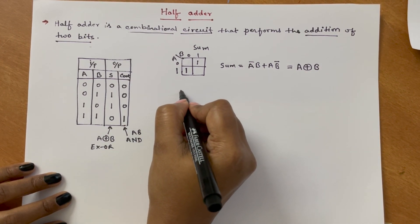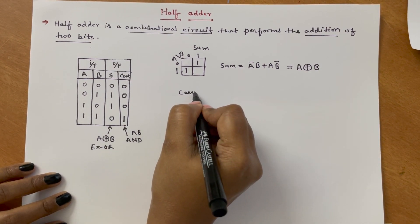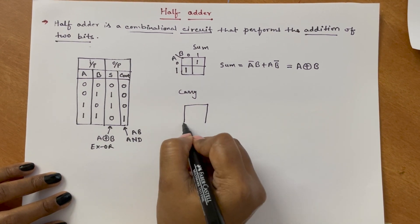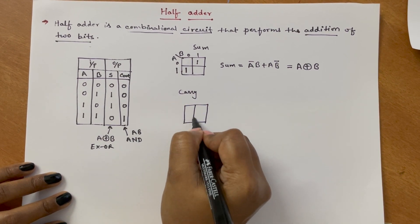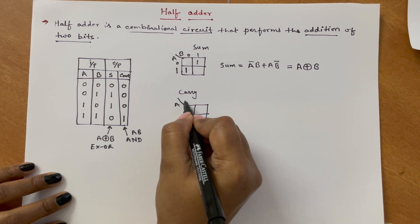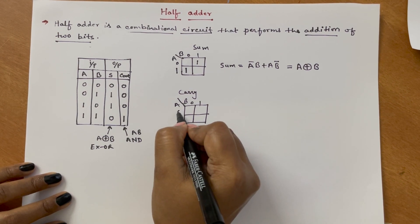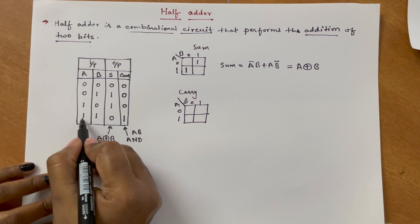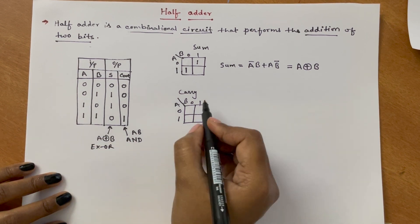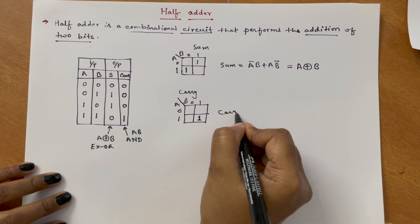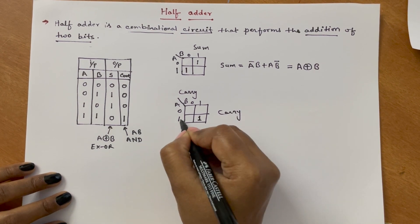Similarly, for carry, writing the KMAP for AB: the values are 0, 1, 0, 1. The carry is 1 only when both A and B are 1, so carry will be A·B.